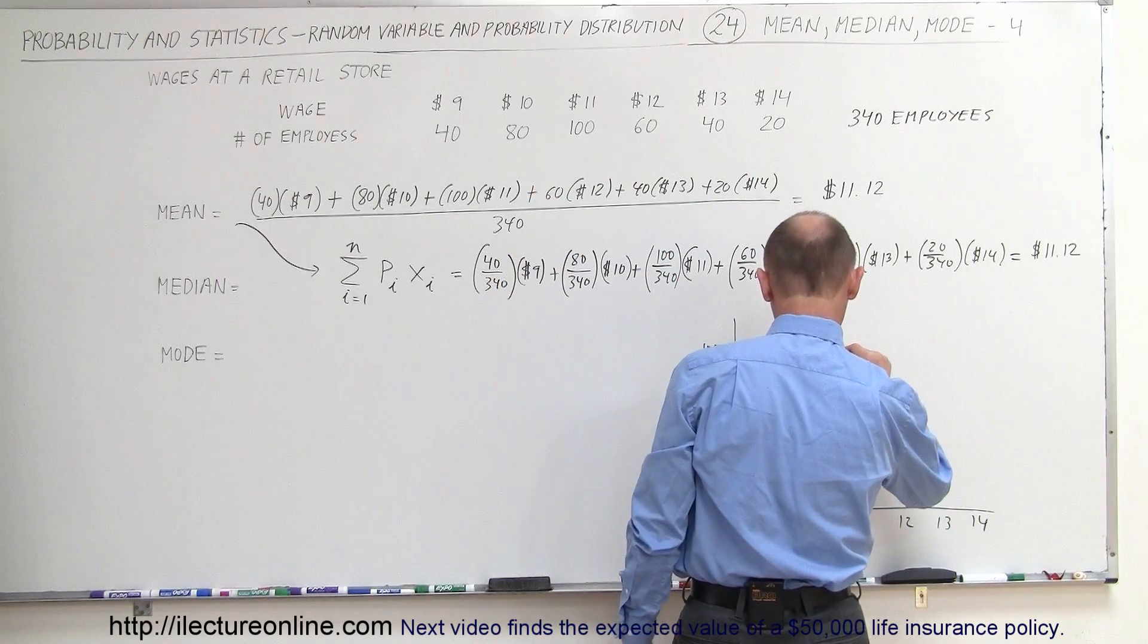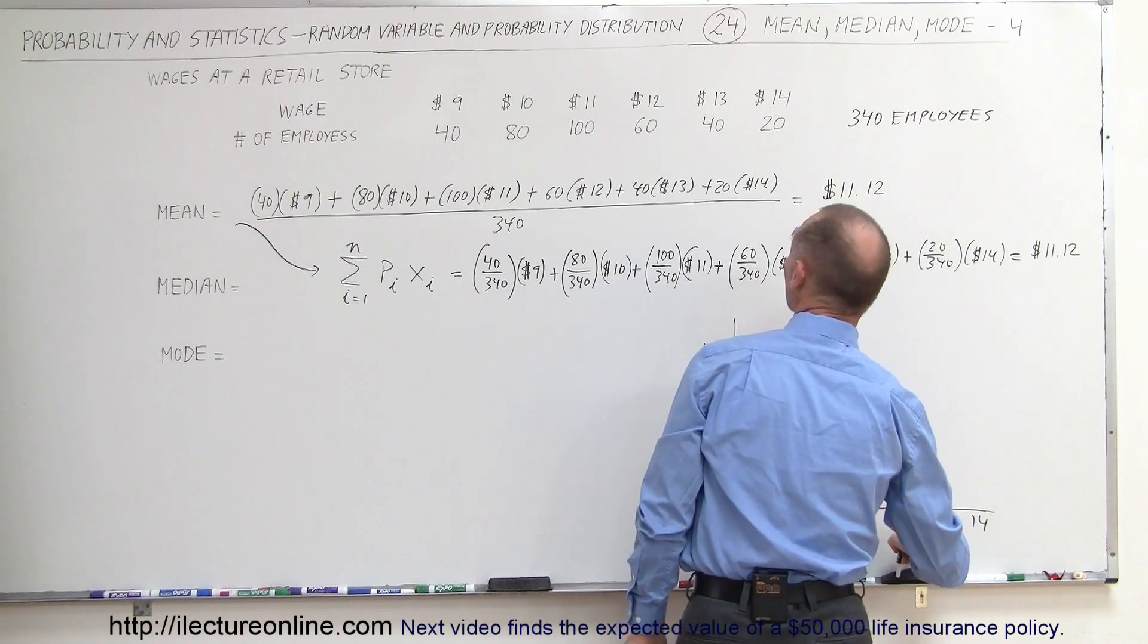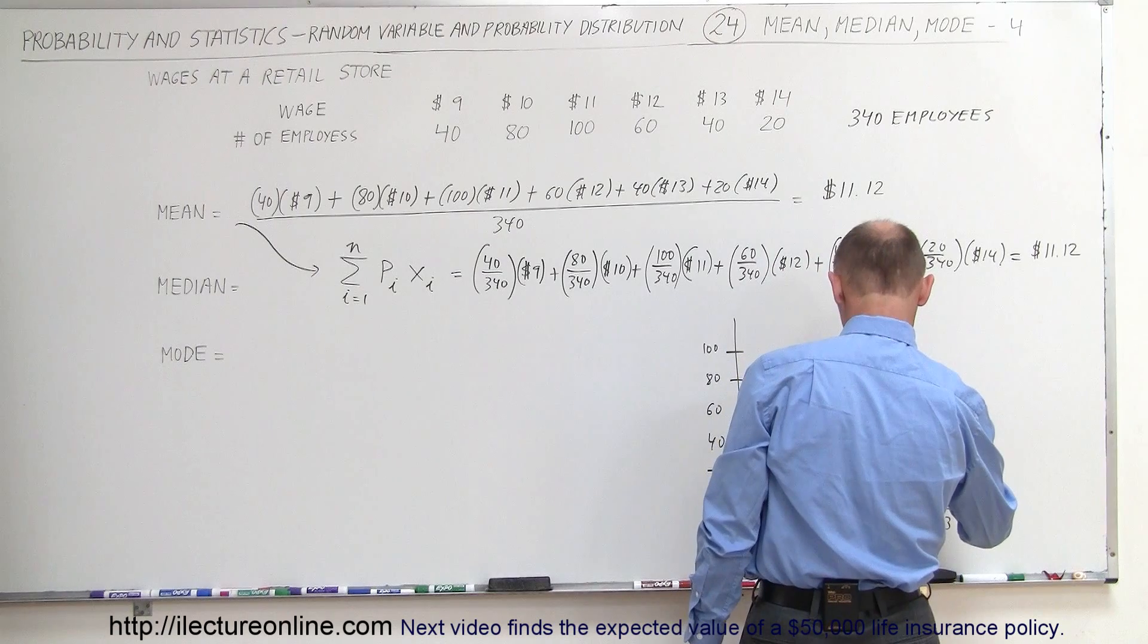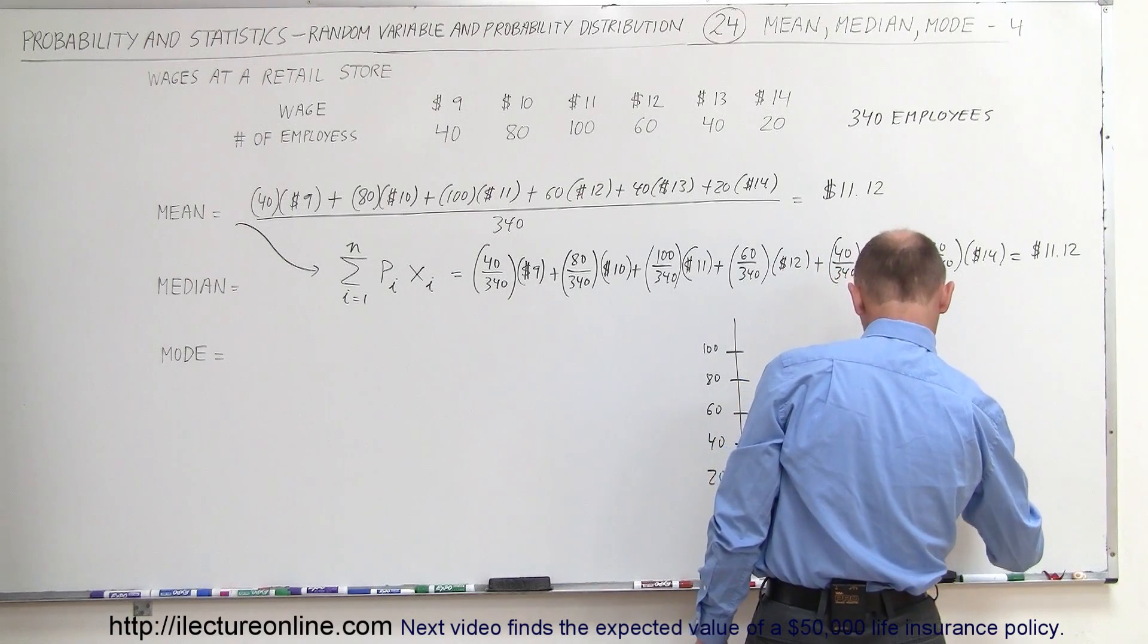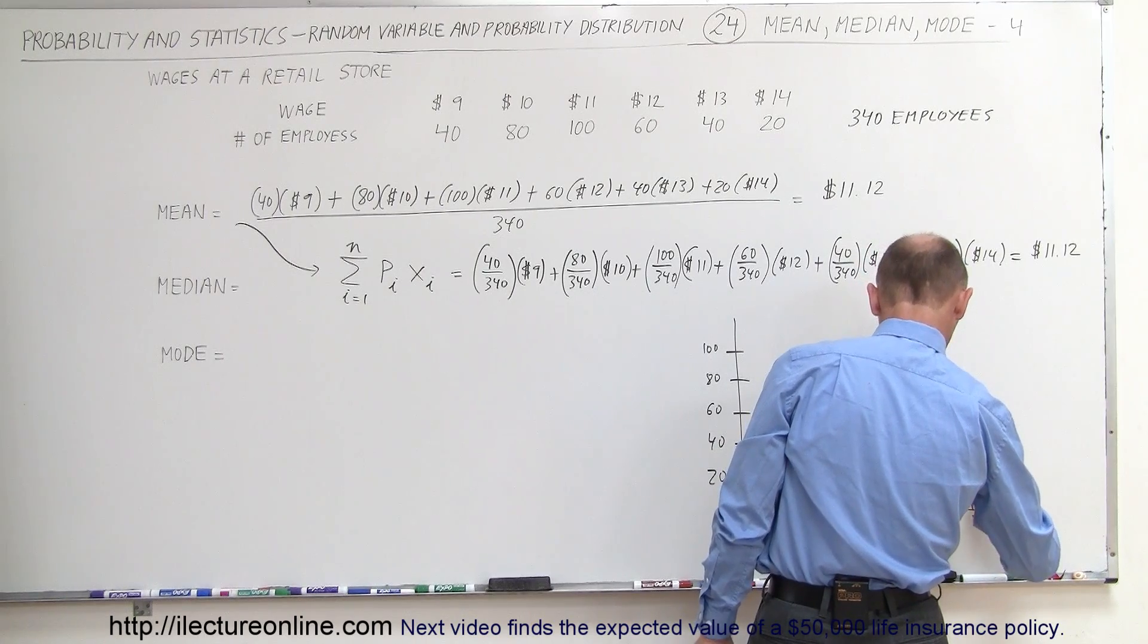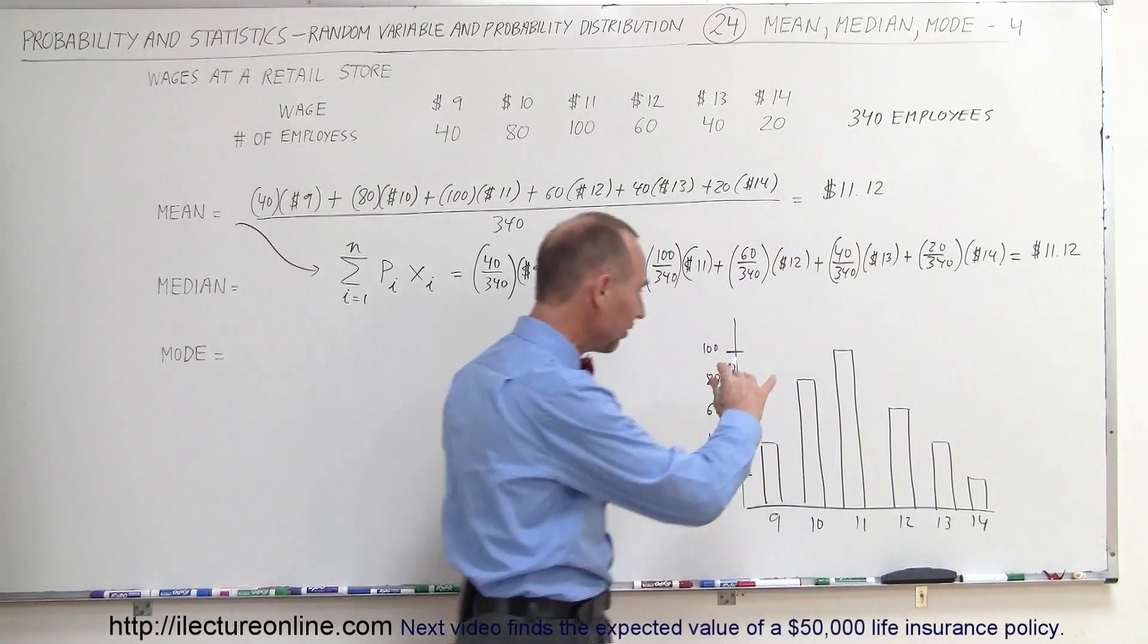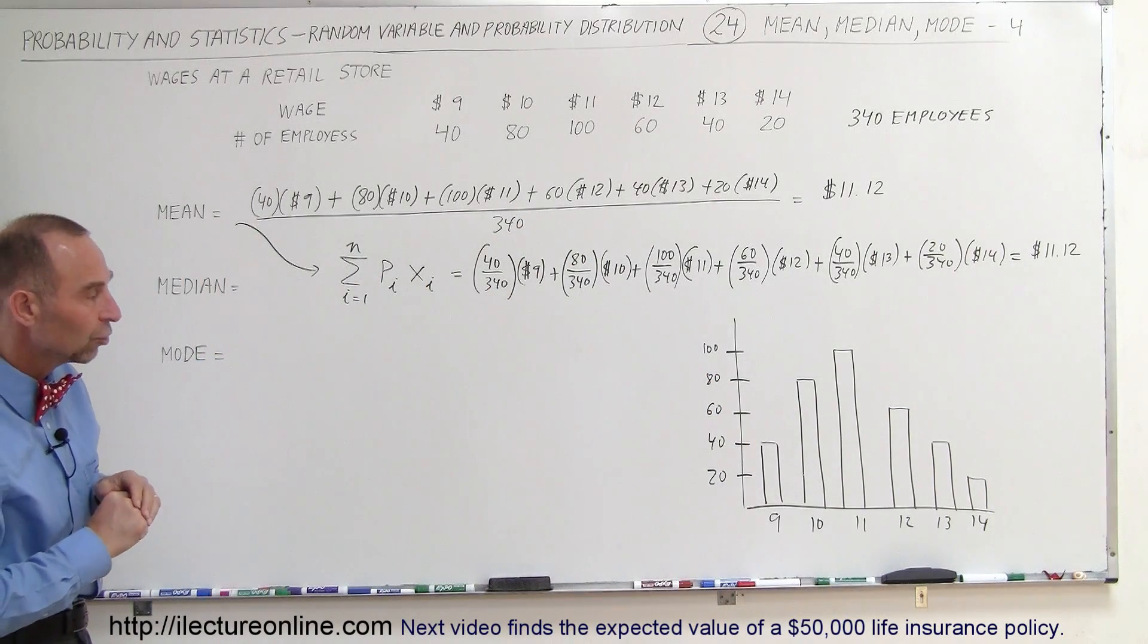Gives you a visualization. Then $11 an hour, we have 100 people earning this money. $12, it's down to 60. $13 is down to 40. And $14 an hour is down to 20 people. Alright, so there's a nice visualization of the wage distribution at that retail store.